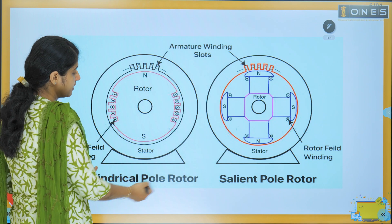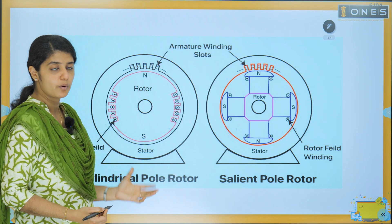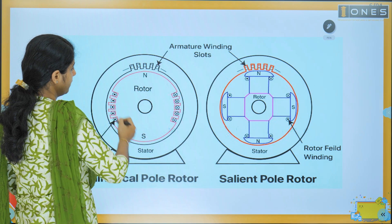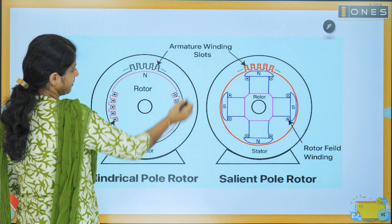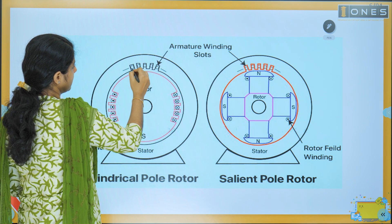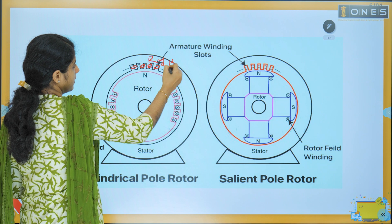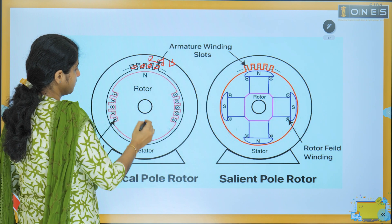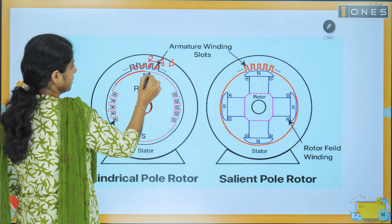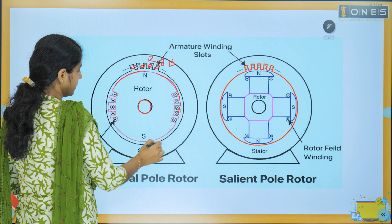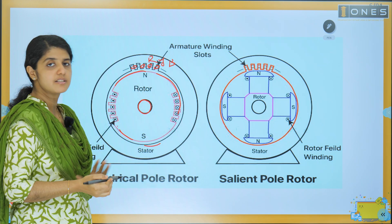First, the cylindrical poles. The stator has three-phase armature windings R, Y, B — three-phase windings on a shaft. The rotor in the cylindrical structure has a cylindrical body.